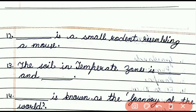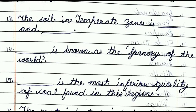Question number thirteen: the soil in temperate zones is dash and dash. The answer is dark and fertile. Question number fourteen: dash is known as the granary of the world. The answer is prairies. Question number fifteen: dash is the most inferior quality of coal found in these regions. The answer is lignite.